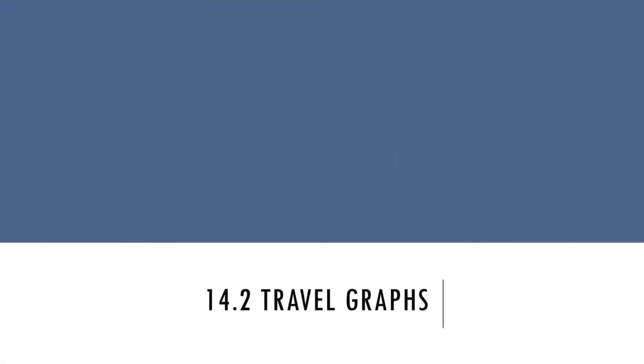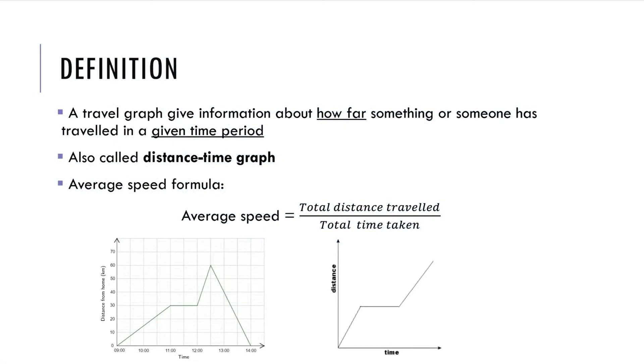Travel Graph. First, definition. The Travel Graph gives information about how far something or someone has traveled in a given time period. It's also called Distance Time Graph. The average speed formula is calculated by the total distance traveled divided by the total time taken.